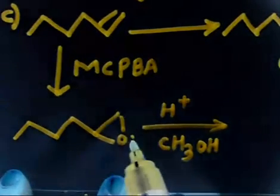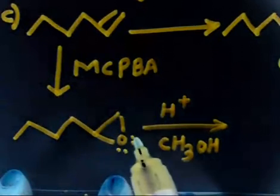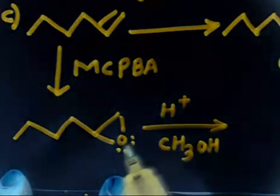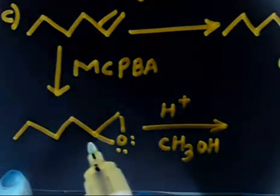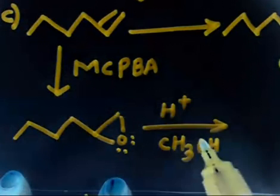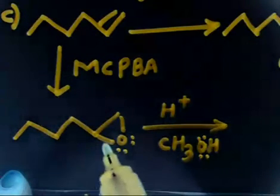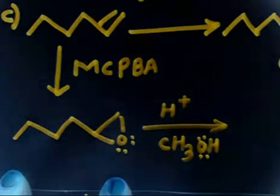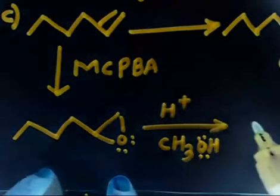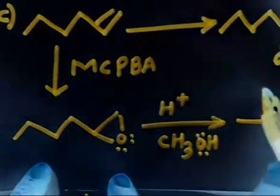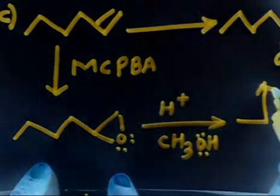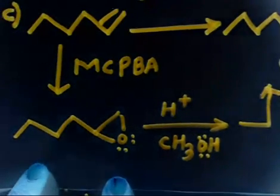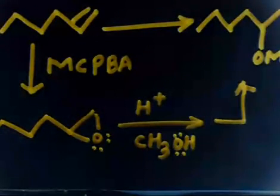What happens is: under H⁺, a carbocation-like intermediate forms at carbon two (secondary). The oxygen lone pair from CH₃OH attacks this carbon, opening the epoxide on that side, so OCH₃ attaches at carbon two and you get OH at carbon one — the desired product.